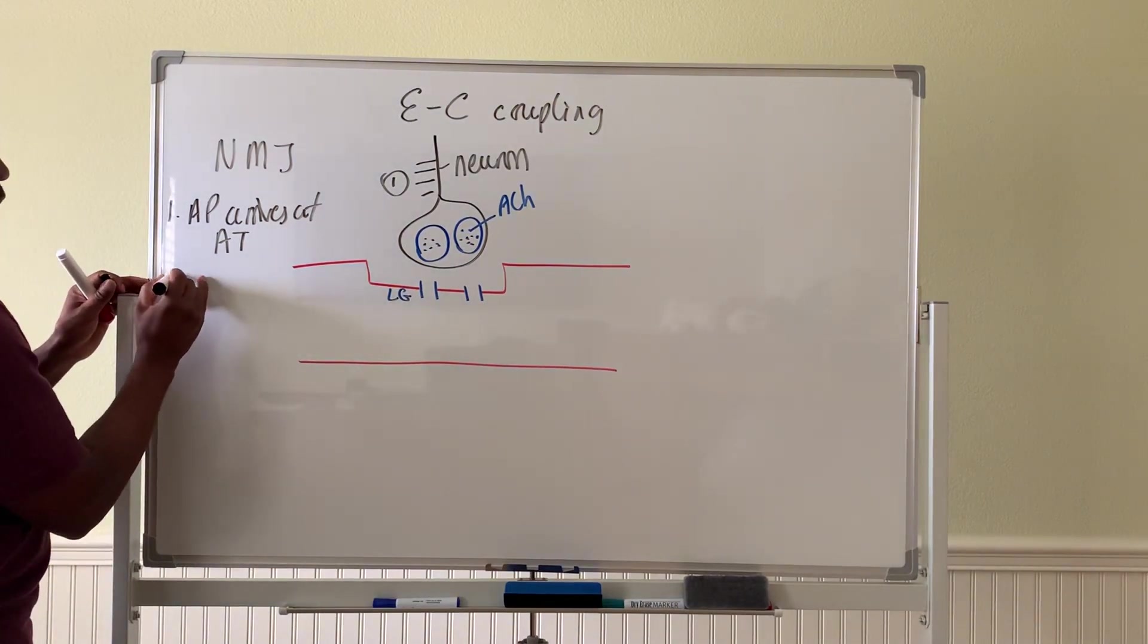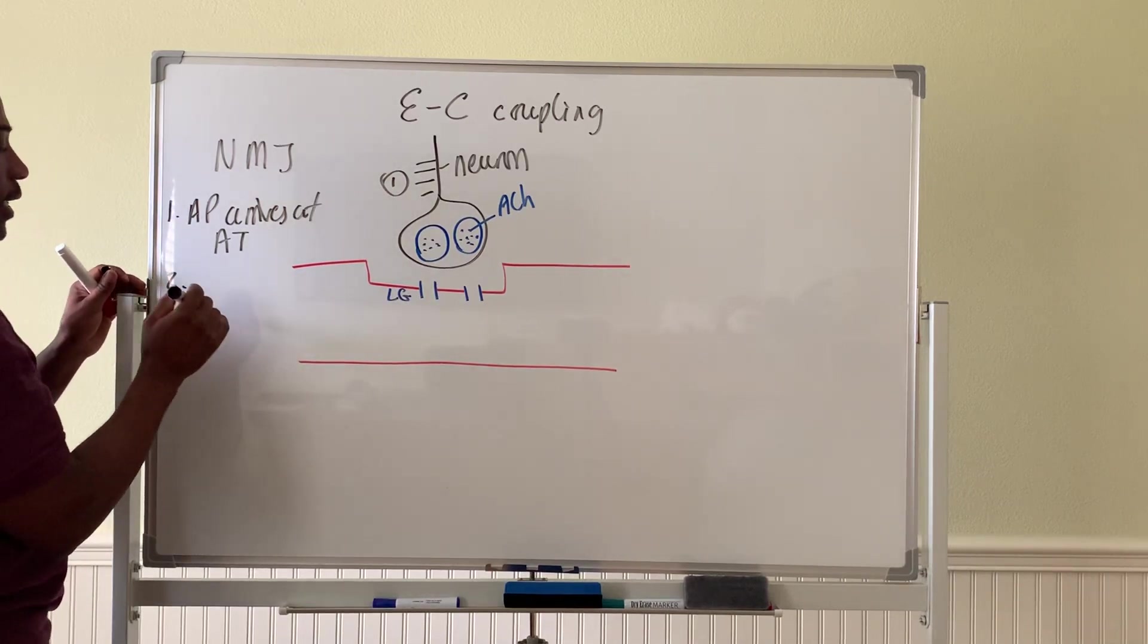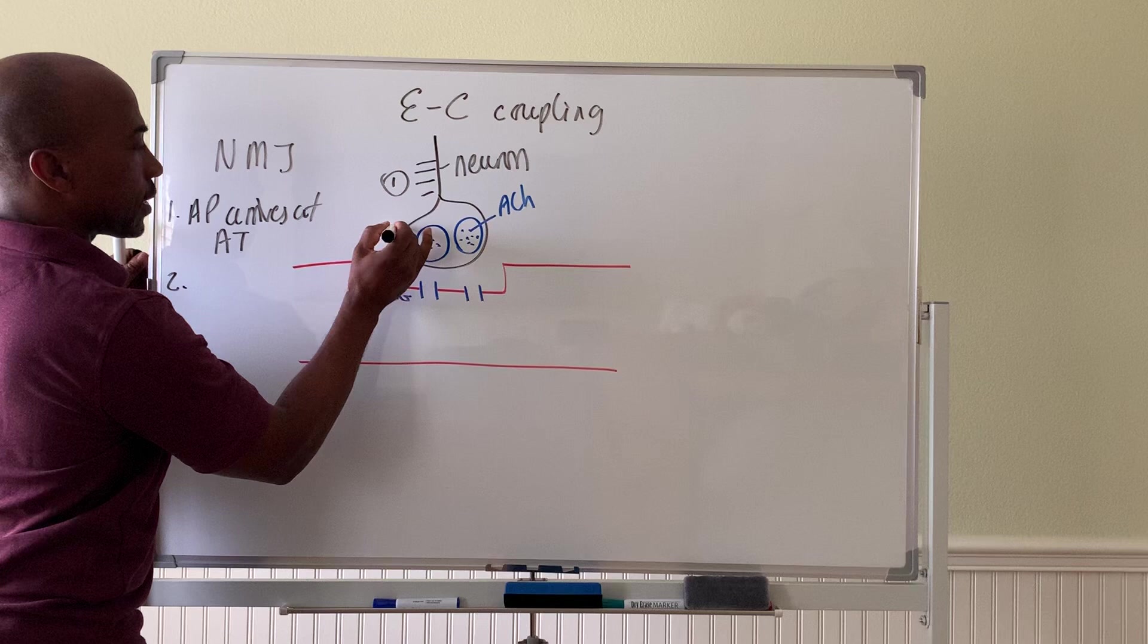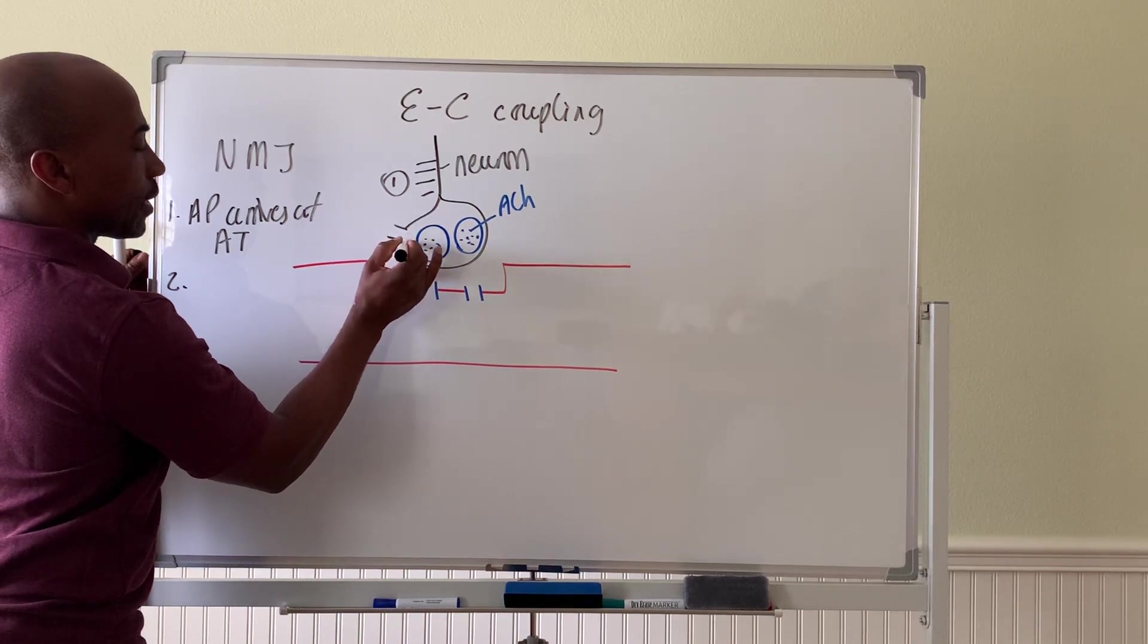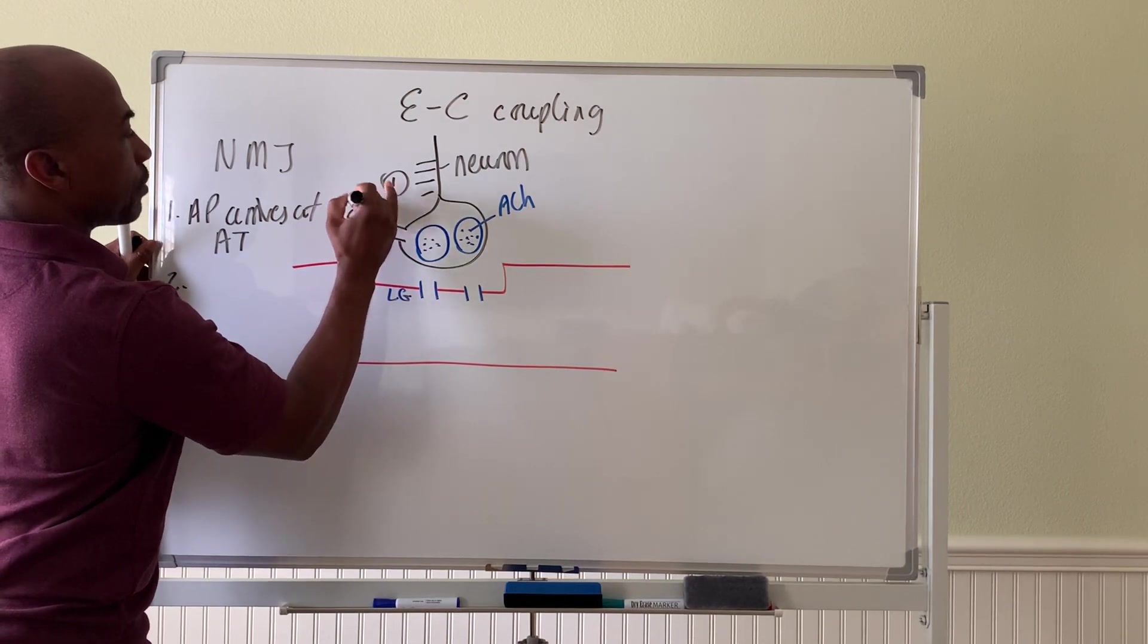Step two, as you know, whenever an AP arrives at an axon terminal, calcium enters. No surprise here. Calcium enters the cell. That's step two. Calcium enters the synaptic knob.